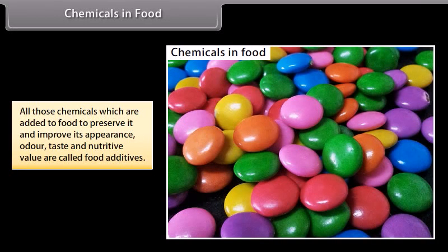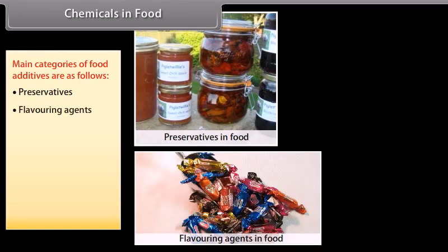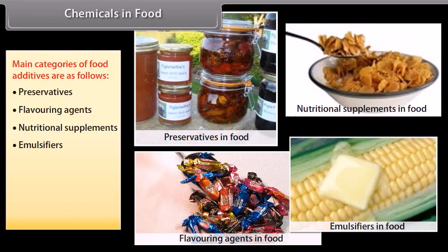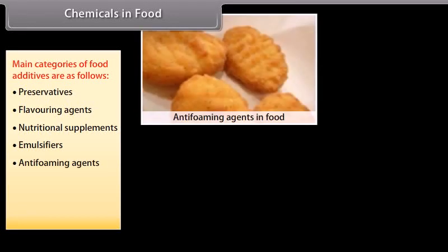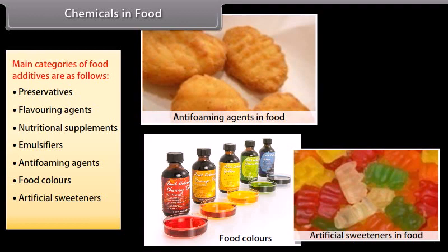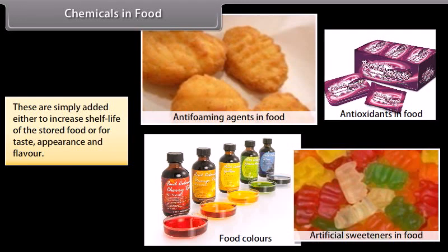Chemicals in food: all those chemicals which are added to food to preserve it and improve its appearance, odour, taste and nutritive value are called food additives. Main categories of food additives are: preservatives, flavouring agents, nutritional supplements, emulsifiers, anti-foaming agents, food colours, artificial sweeteners and antioxidants. These are added either to increase shelf life of the stored food or for taste, appearance and flavour.